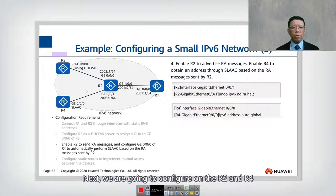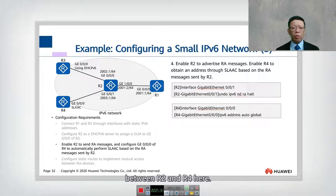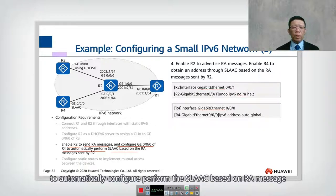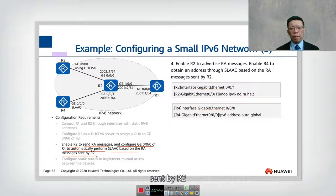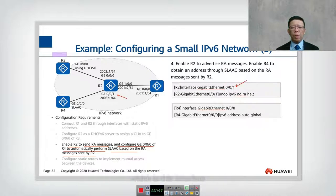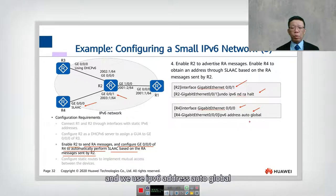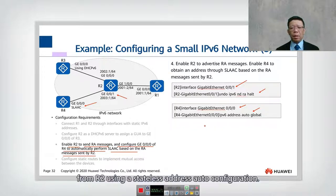Step 3: Configure SLAAC between R2 and R4. On R2's interface GE 0/0/1, use 'undo ipv6 nd ra halt' to enable router advertisement. On R4's interface, use 'ipv6 address auto global' so R4 can automatically obtain an IP address from R2 using stateless address auto-configuration based on the RA message sent by R2.